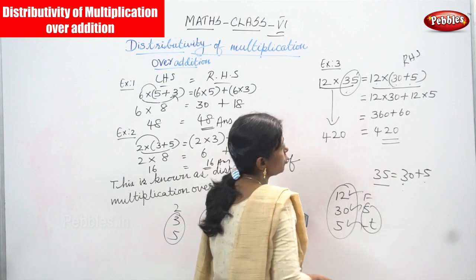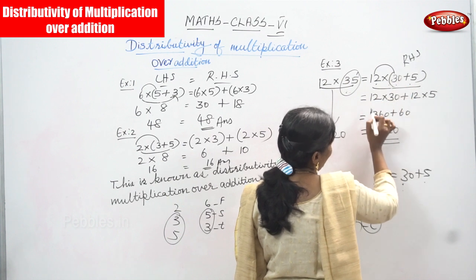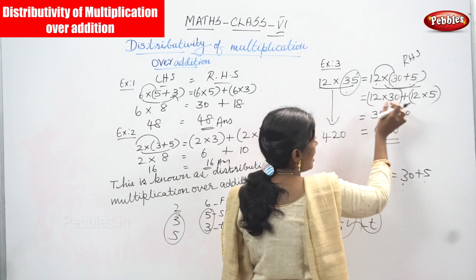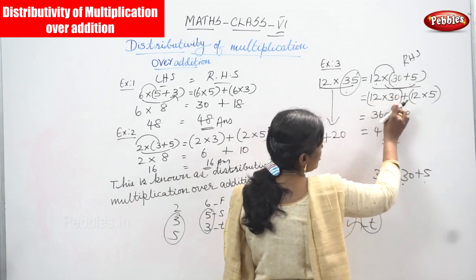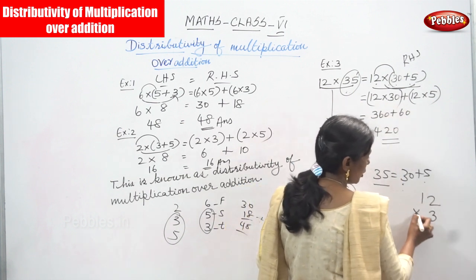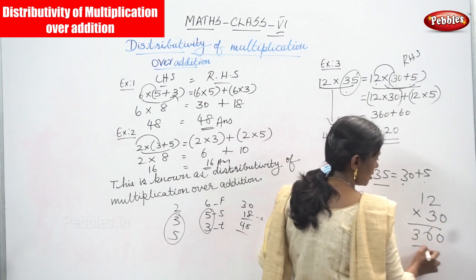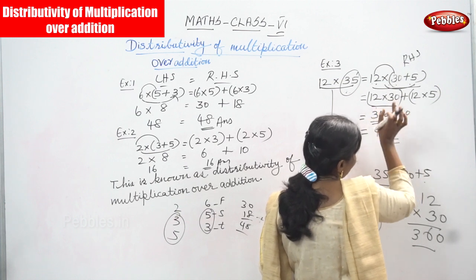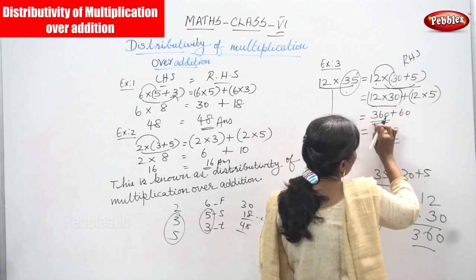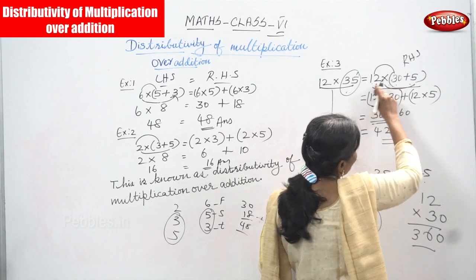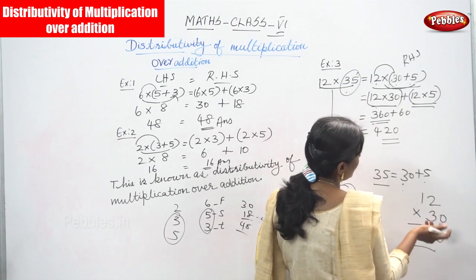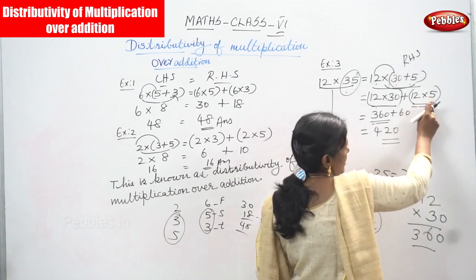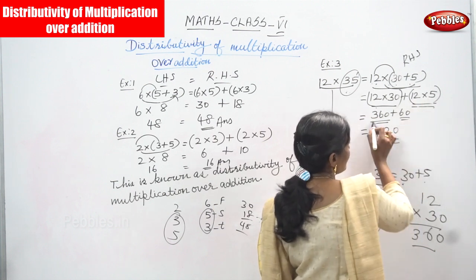For the RHS, take the first and second number — 12 and 30 — in one bracket, and the first and third number — 12 and 5 — in a separate bracket. Multiply 12 into 30: first multiply 12 into 3 to get 36, then add a zero for 30, giving 360. Then multiply 12 into 5 to get 60.